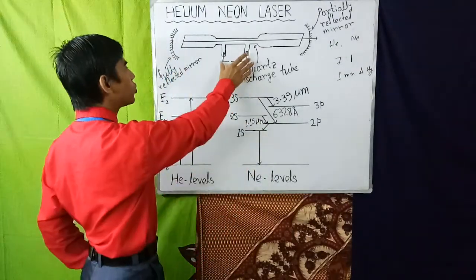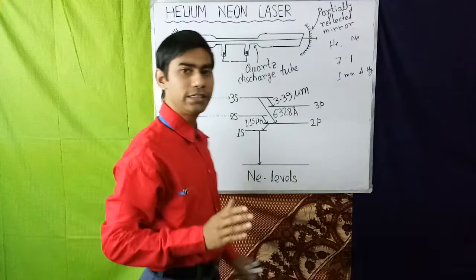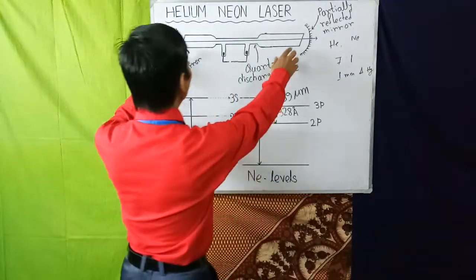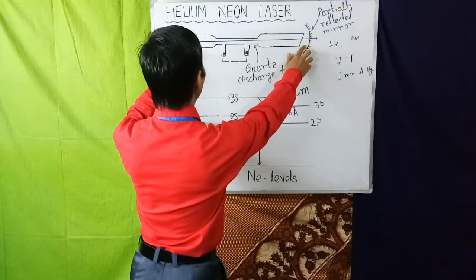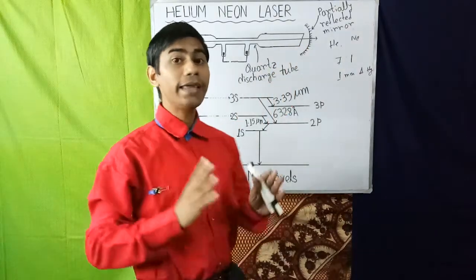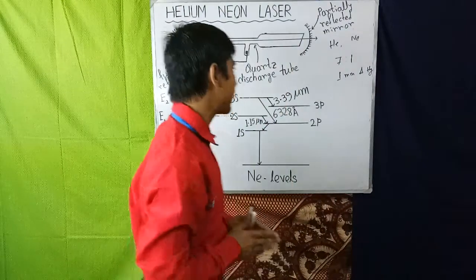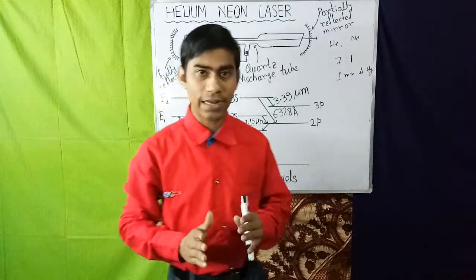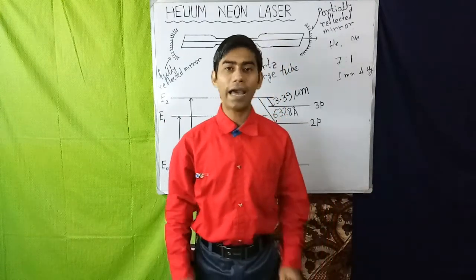Two Brewster windows are used at the two ends of the tube and they are inclined at the Brewster's angle. It minimizes unwanted reflection and allows plane polarized light to come out.